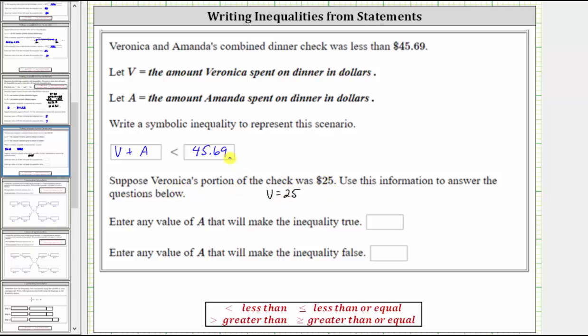Let's substitute V into the inequality that we have here. Performing the substitution gives us 25 plus A is less than $45.69.